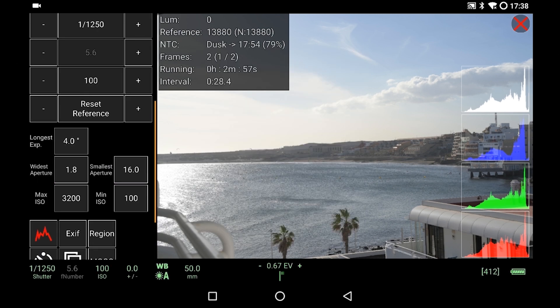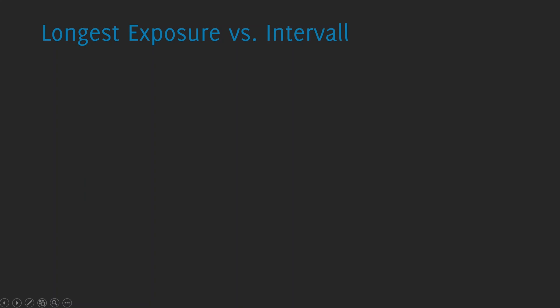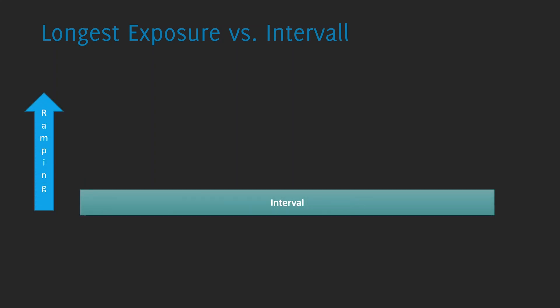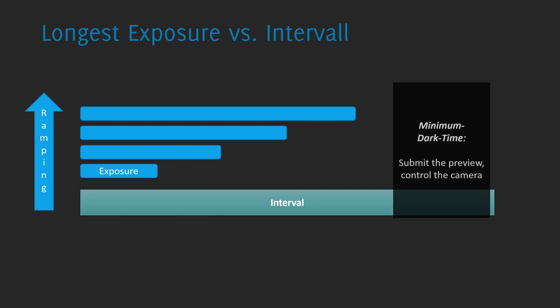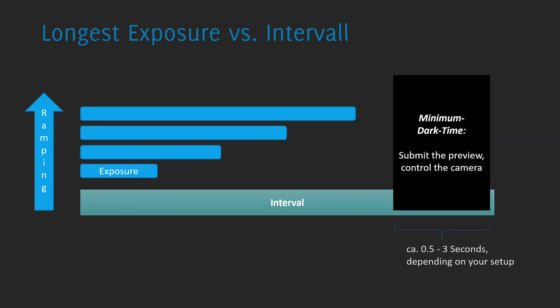Let's start with longest exposure. What to consider when setting the longest exposure is your interval. For example, if you have an interval of six seconds then a longest exposure time of four seconds would be fine — you'd have two seconds of dark time in between. In those two seconds the camera will transfer the preview to the tablet, the histogram will be analyzed, and the tablet can decide if it will change the settings on the camera. Don't make this dark time too short, otherwise the app won't be able to control the camera between shots. Two seconds dark time is fine for the beginning. So four seconds longest exposure for an interval of six seconds would be just fine.